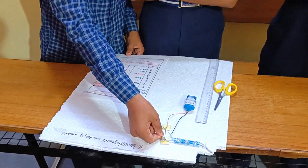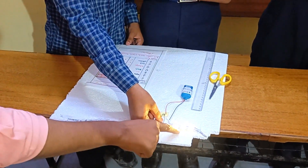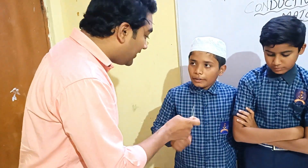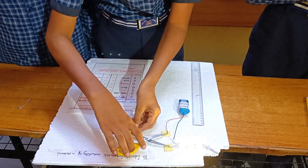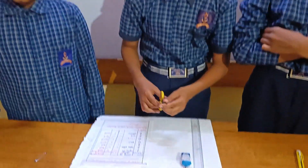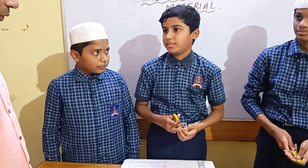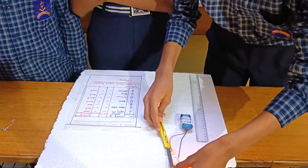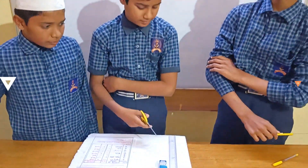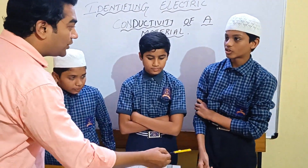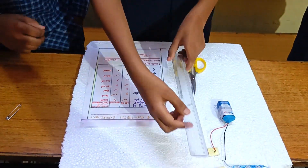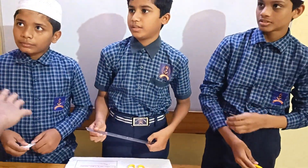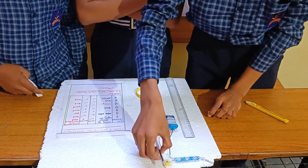Now he is going to show how he is using the material. Safety pin — when the bulb glows, this safety pin is a metal. Very good. With the help of scissors — the bulb is not glowing. So this material is not flowing current — bad conductor of electricity. Can you show another example for a bad conductor? When it is not flowing, it is a bad conductor of electricity.